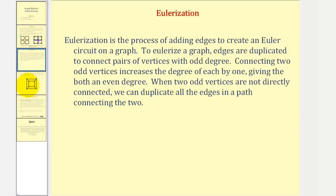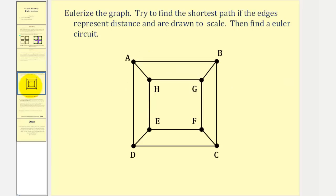Let's take a look at another example. We want to Eulerize the given graph. We want to try to find the shortest path if the edges represent distance and are drawn to scale. Then find an Euler circuit.